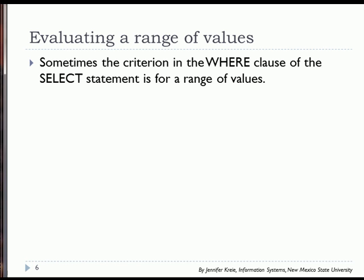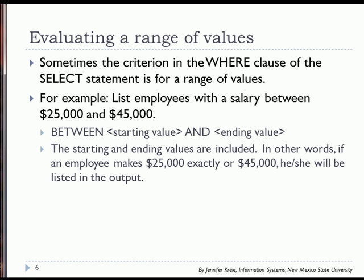Sometimes you want to look at criteria within a range of values. For example, let's say we wanted to list employees with a salary between $25,000 and $45,000. The words we use are BETWEEN with the starting value AND the ending value. The starting and ending values are included in this range.